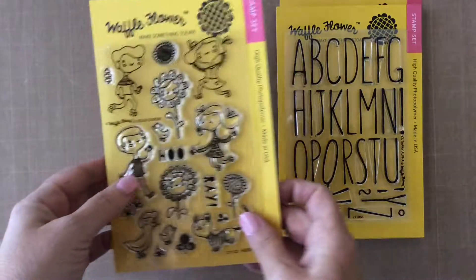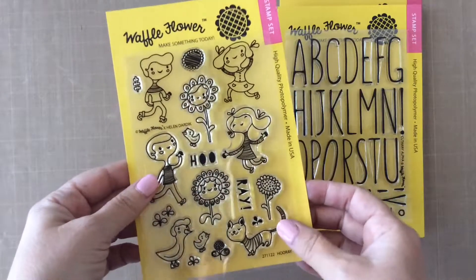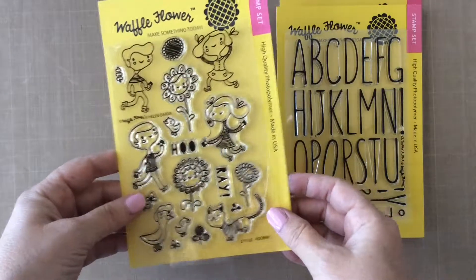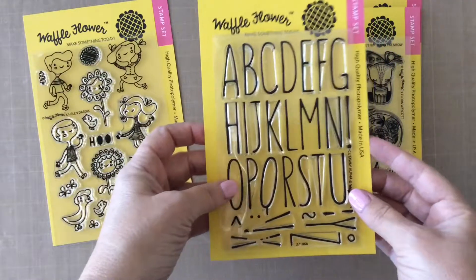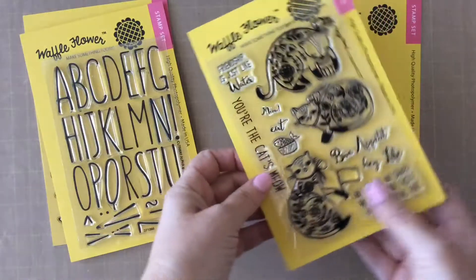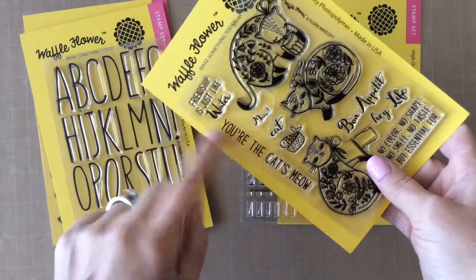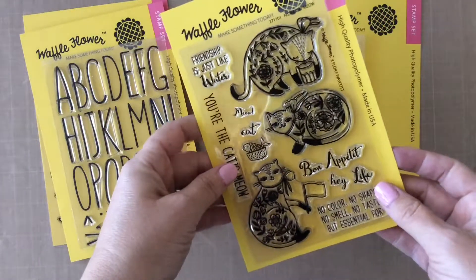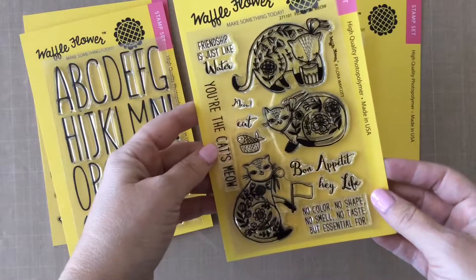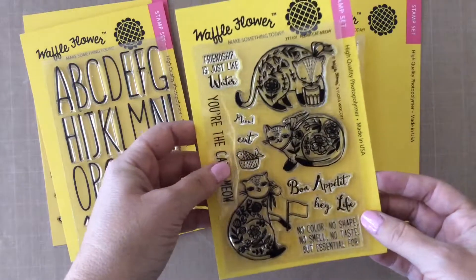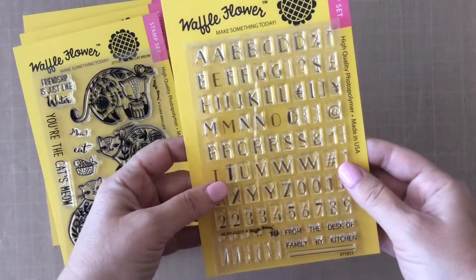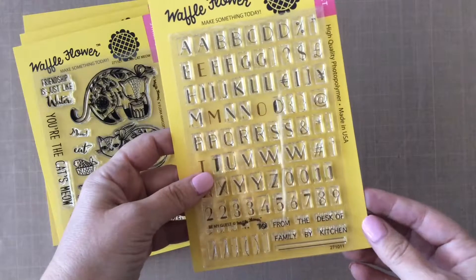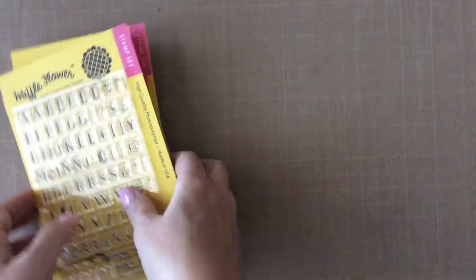So we're going to be using this set called Hooray, illustrated by Helen Dardick with these darling fun happy kids, and also this alpha cutaway set. I'm going to use a portion of this sentiment from the Flora Cat Meow set, and then also some of the letters in this Be My Guest set. We're going to spell the To Me for the inside of the card. So let's get started.